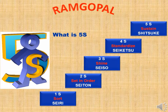5S is a Japanese system. The five S's are: Seiri, meaning Sort; Seiton, meaning Set in Order; Seiso, meaning Shine; Seiketsu, meaning Standardize; and Shitsuke, meaning Sustain.